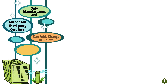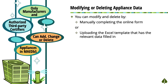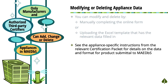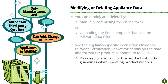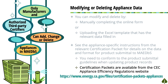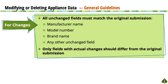Let's begin with an overview of how to modify or delete appliance data. You can modify or delete product data either manually or by uploading an Excel template. There are certification packets for appliances on the CEC Appliance Efficiency Regulations website. The certification packets contain appliance-specific instructions on how to format product data when submitting to the MABES. These instructions should be followed when modifying product data as well. When changing product data, be sure that all unchanged fields match the original submission.